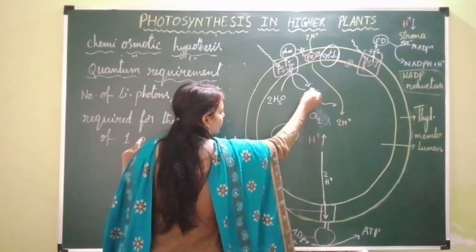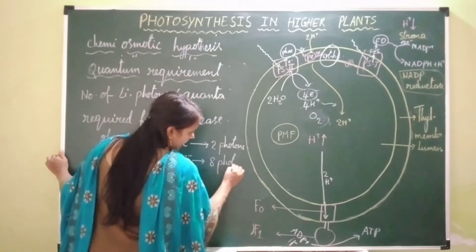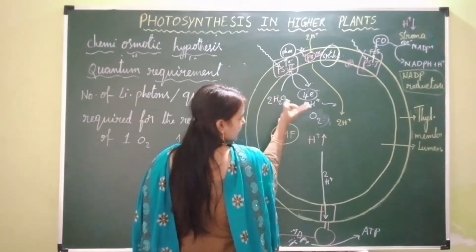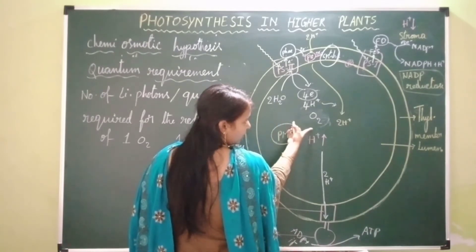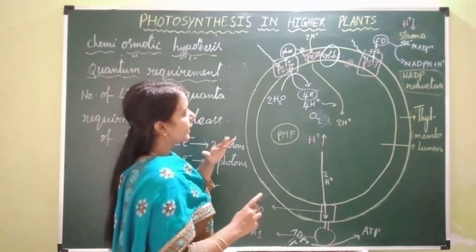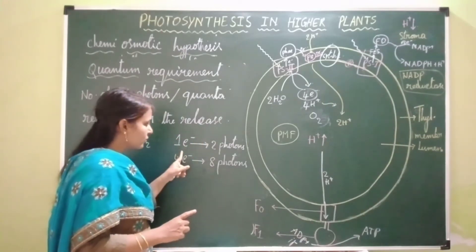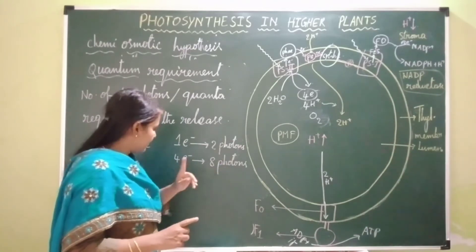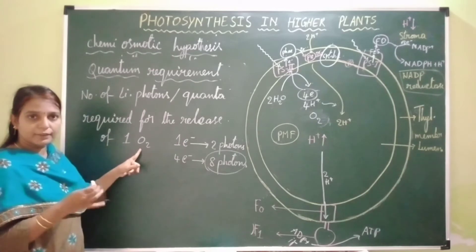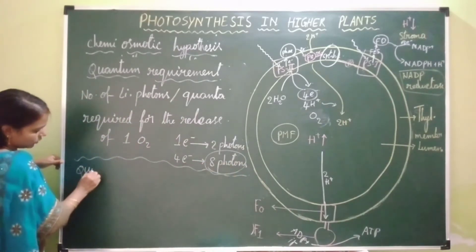So for the transport of four electrons, eight photons are required. When eight photons are absorbed, two water molecules undergo splitting, resulting in the release of four electrons, four protons, and one oxygen molecule. Each photosystem requires one photon for its activation during the transport of one electron, and hence for one electron transport two photons are required. Therefore these eight photons represent the quantum requirement for the release of one molecule of oxygen.